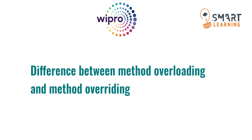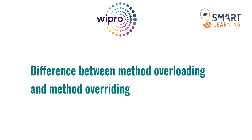The next technical question is: difference between method overloading and method overriding. For overloading, only the method name is the same and the return type and parameters are different. But in case of overriding, the method signature is the same — that means the return type, parameters, and the method name are also the same for both methods.